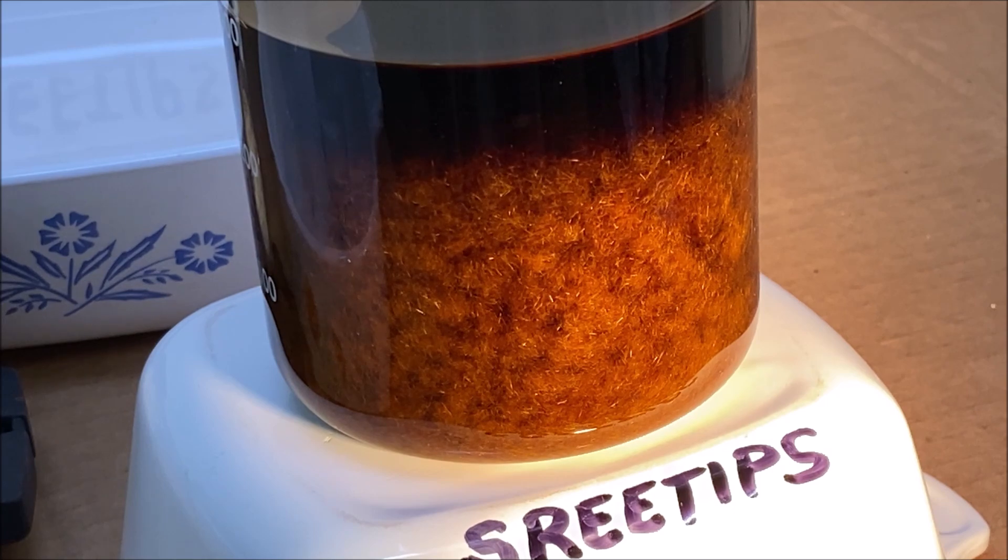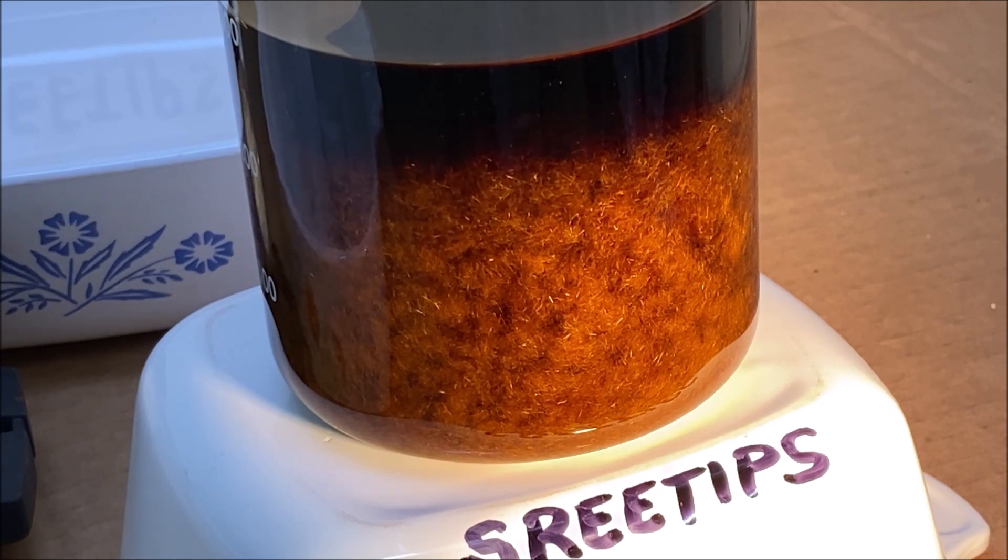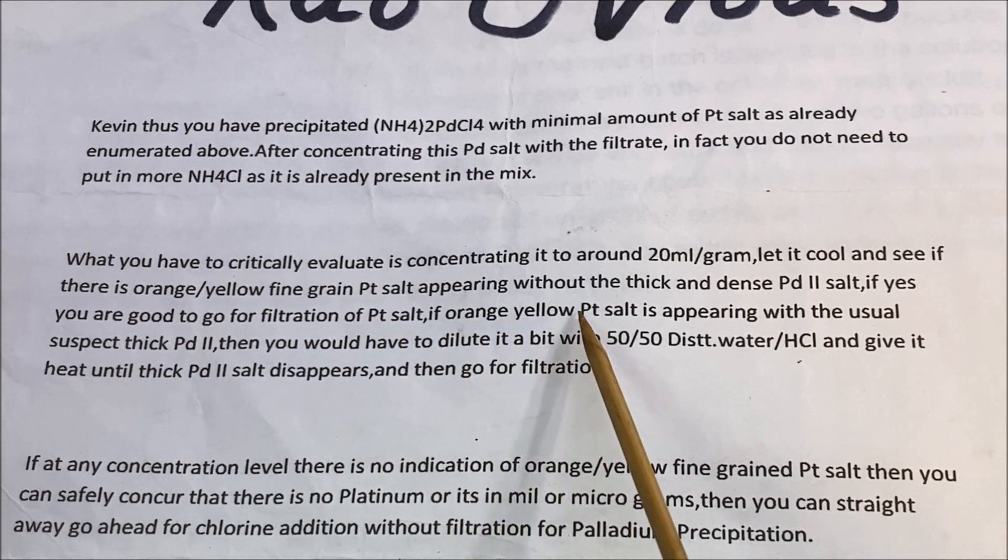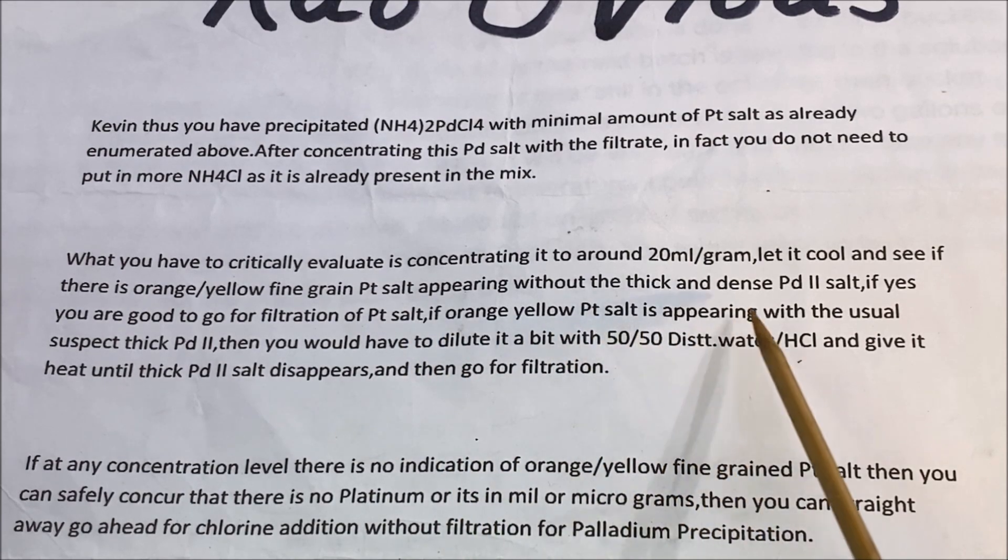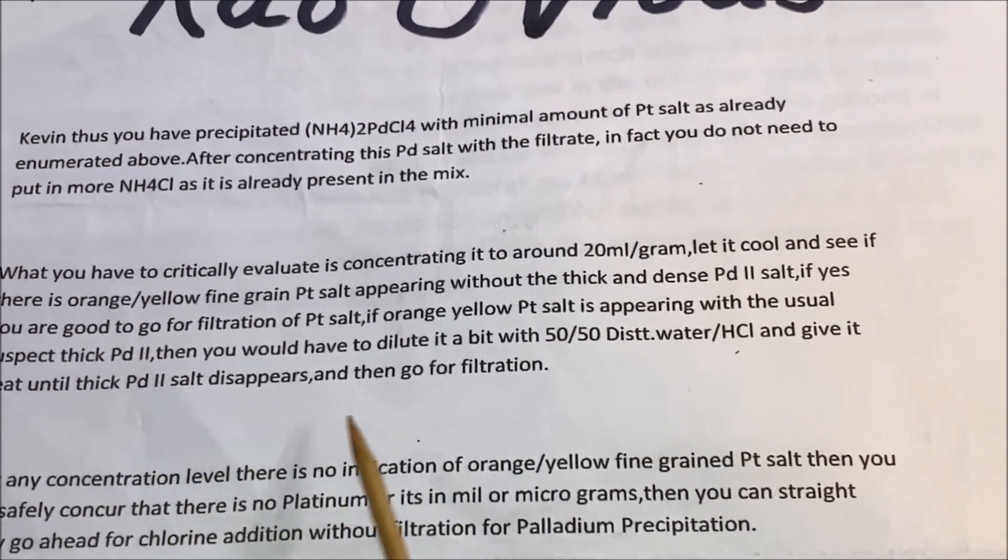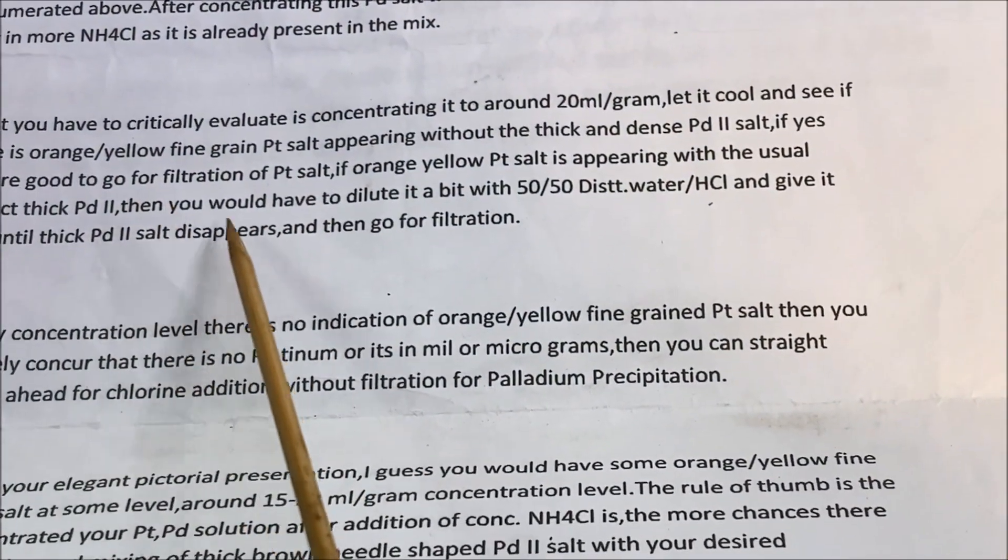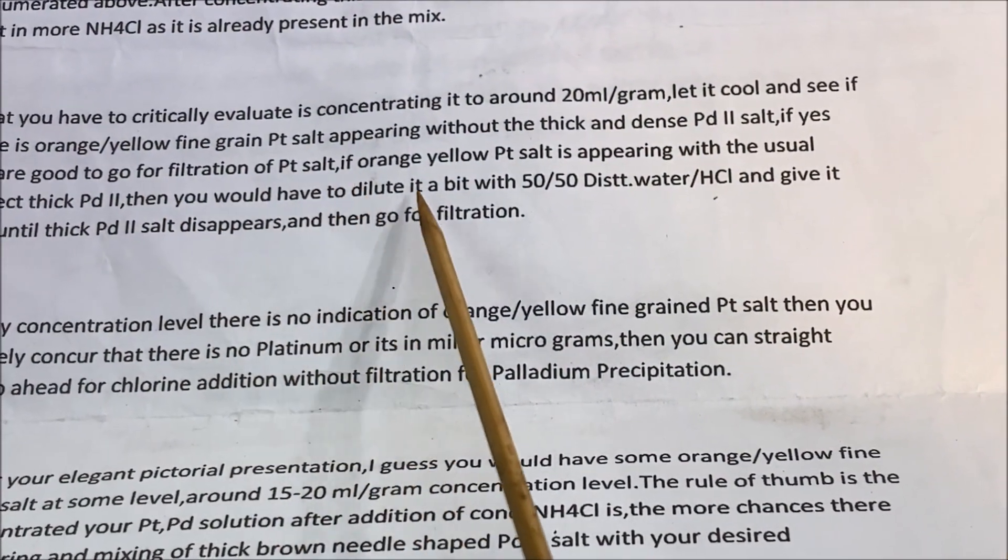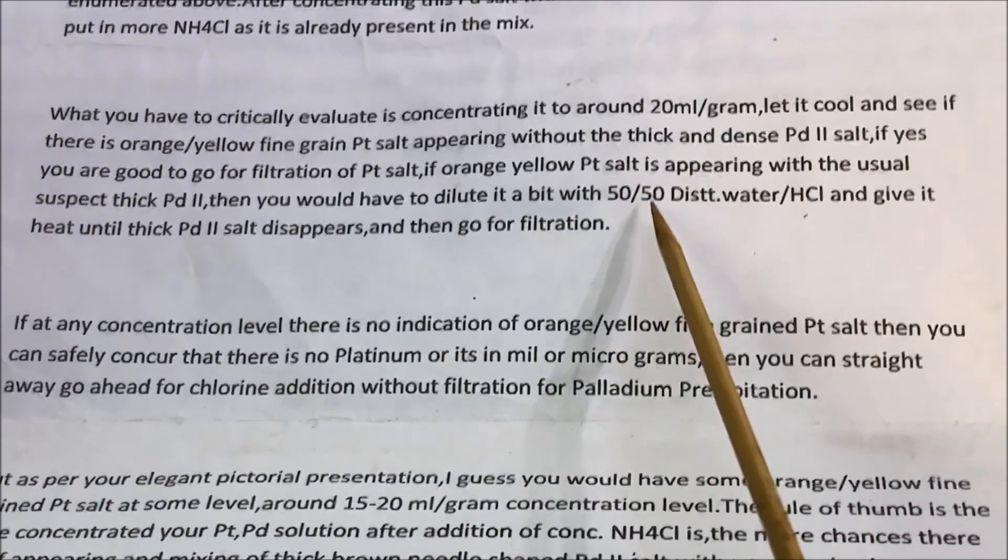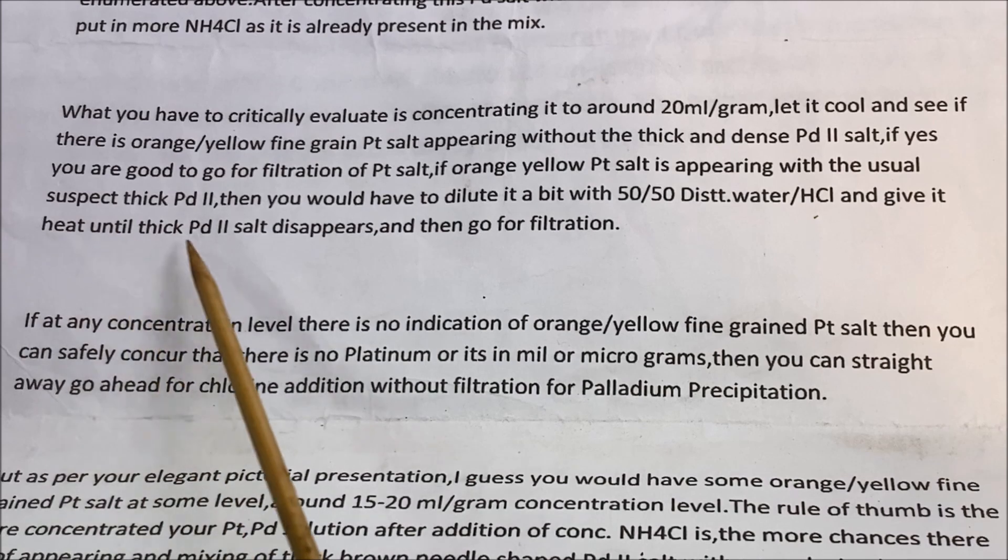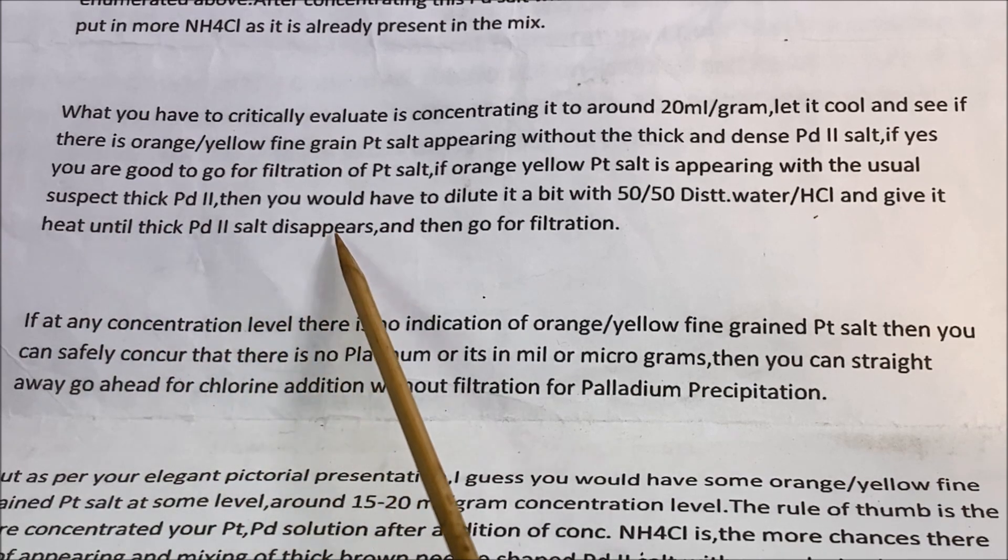This is the condition I think I have. If the orange yellow Pt salt is appearing with the usual suspect thick PdCl2, which is I think what that is right there, thick needle-like crystals, then you have to dilute it a bit with some 50-50 distilled water and hydrochloric acid and give it a little heat until the thick PdCl2 salt disappears.